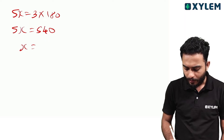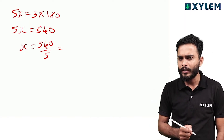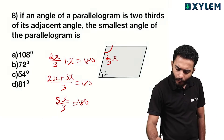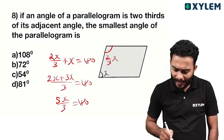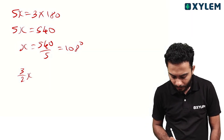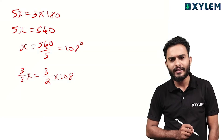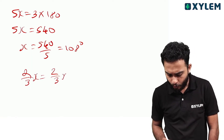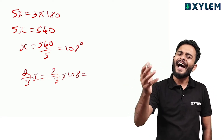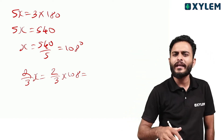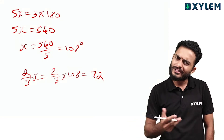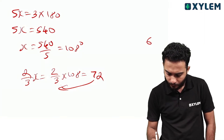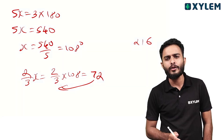540 divided by 5 equals 108. So one angle is 108 degrees. The other angle is (2/3) times 108, which is 72 degrees. You can verify: 3 into 72 is 216, and 2 into 108 is also 216 — they are the same. The smallest angle is 72 degrees.